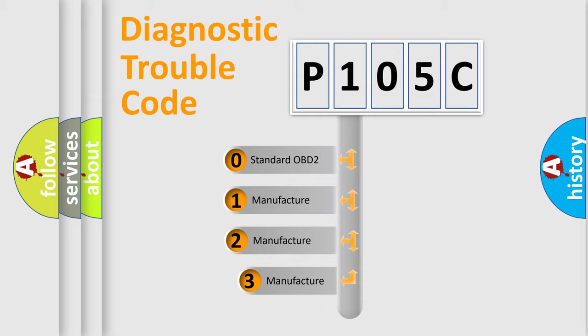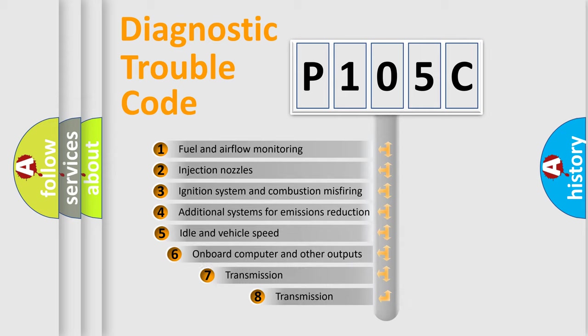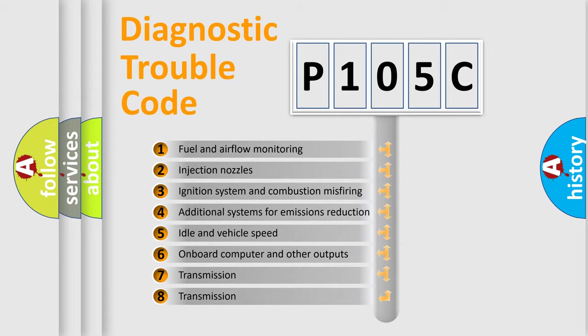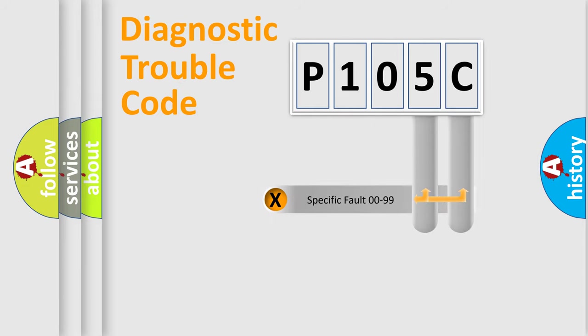If the second character is expressed as zero, it is a standardized error. In the case of numbers 1, 2, 3, it is a more specific expression of the car-specific error. The third character specifies a subset of errors. The distribution shown is valid only for the standardized DTC code. Only the last two characters define the specific fault of the group.